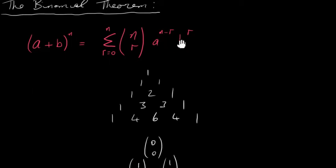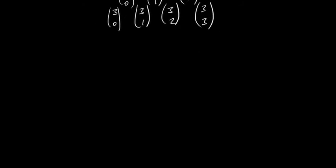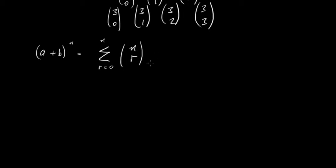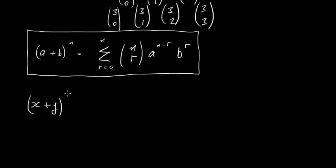Effectively, this part of the formula is the same as what we did previously. So let's try an example. We'll write the formula down again: we've got a plus b to the power of n, which is going to be the sum as r goes from 0 up to n of n choose r, times the first term to the power of n minus r, times the second term to the power of r. So this is our formula. Now let's take a fairly simple example: x plus y raised to the power of 3.